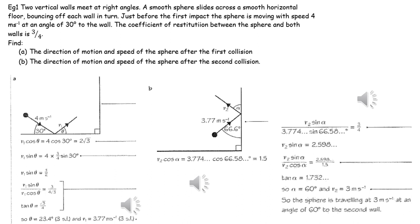Once again, we need to work out the components of the velocity parallel and perpendicular to the vertical surface, and then apply conservation of linear momentum parallel to the vertical surface and Newton's experimental law perpendicular to the vertical surface, and then solve these simultaneously to work out the value of alpha and V2.